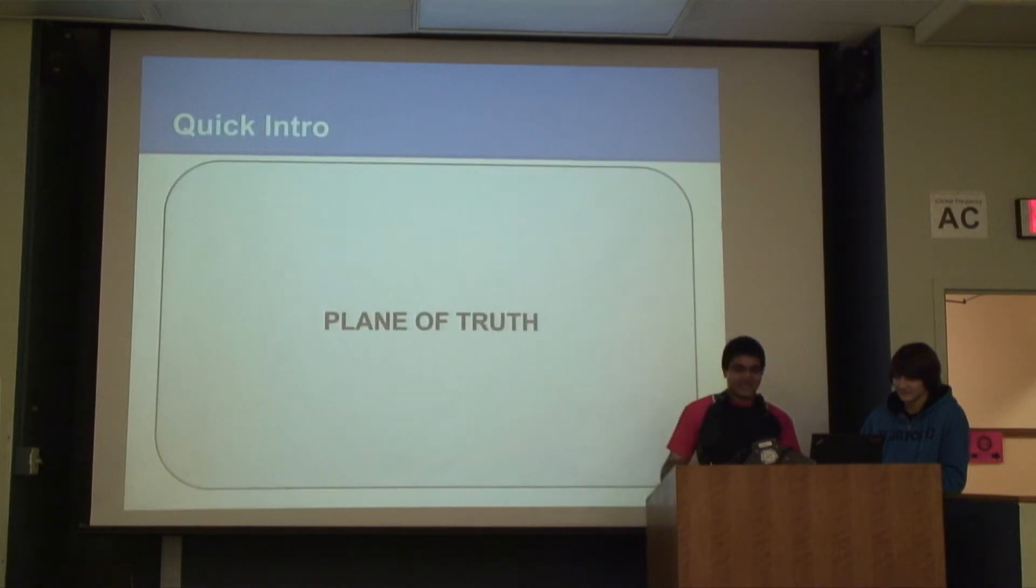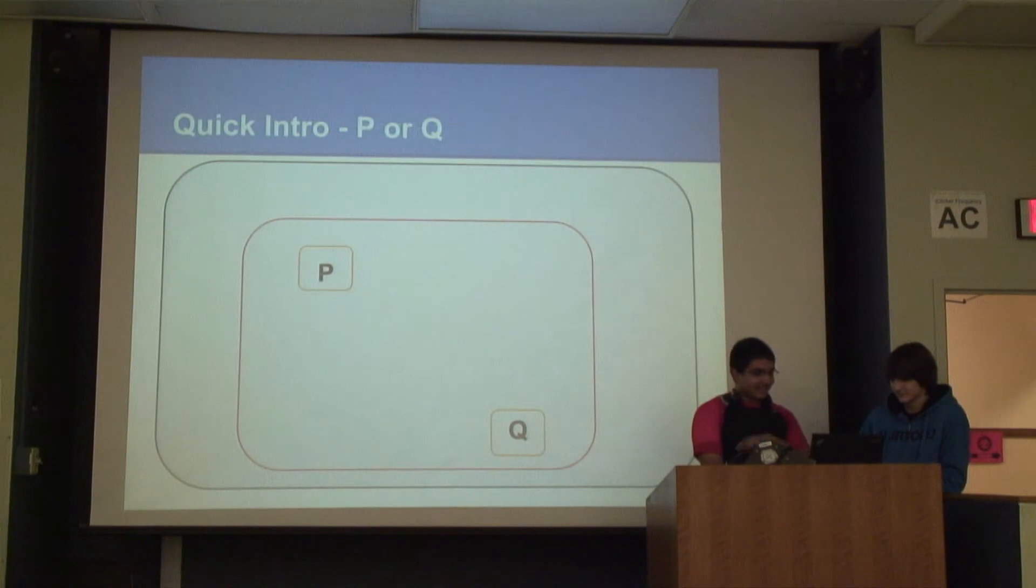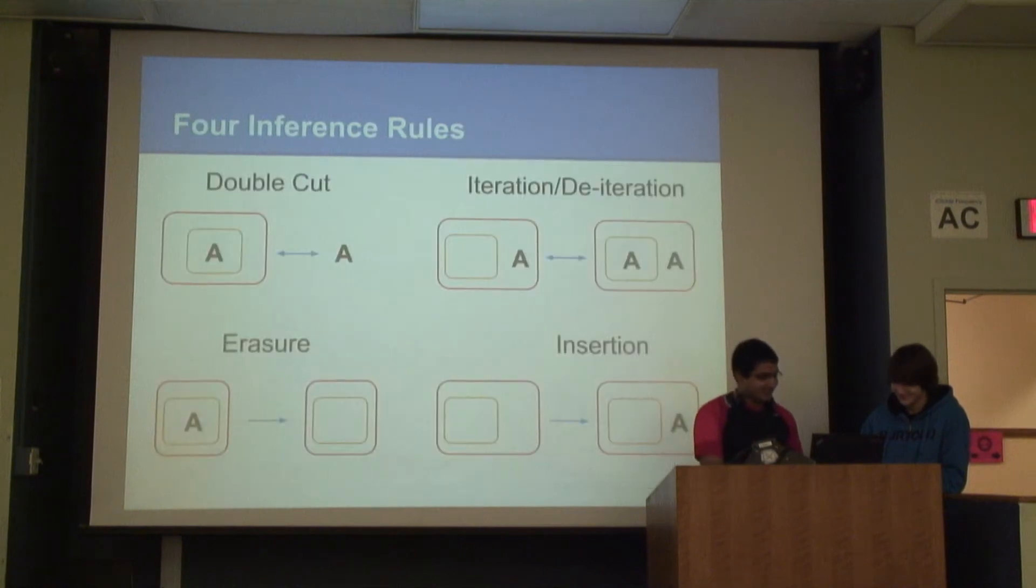It only has a cut operator. So, quick recap. Here's a plane of truth. You can put anything on here, and it's conjuncted, which means it's anded together. So you put a P and Q, and that's P and Q. Simple. Then you put a circle around something, a round rectangle, and it's called a cut, and that negates it. So it's not P and Q. And for example, it's not, not, and not Q, which becomes or.